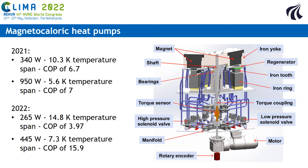The current performance of the best magnetocaloric heat pump prototypes are quite impressive. In 2021, one prototype gave a cooling power of 340 watts for a temperature span of 10.3 kelvin and a COP of 6.7, and a power of 950 watts for a temperature span of 5.6 kelvin and a COP of 7. This year, the prototype gave a power of 265 watts for a temperature span of 14.8 kelvin and a COP of 3.97, and a power of 445 watts for a temperature span of 7.3 kelvin and a COP of 15.9.